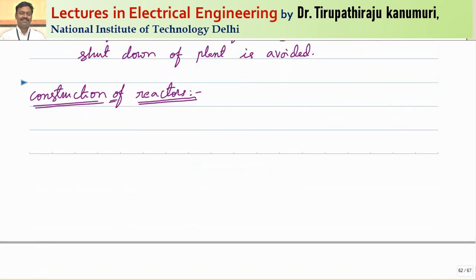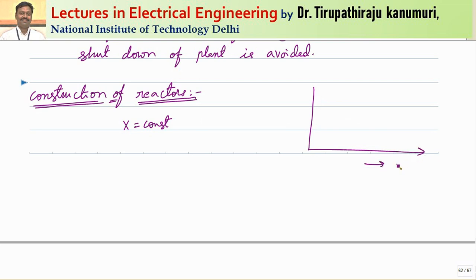Let us first see the construction of a reactor. The basic principle is that the reactance value X of the reactor must be maintained constant. The reactance comes from the relationship involving the current passing through the reactor. An inductor is made by taking a core, on which multiple turns of winding are made — this is called a reactor.